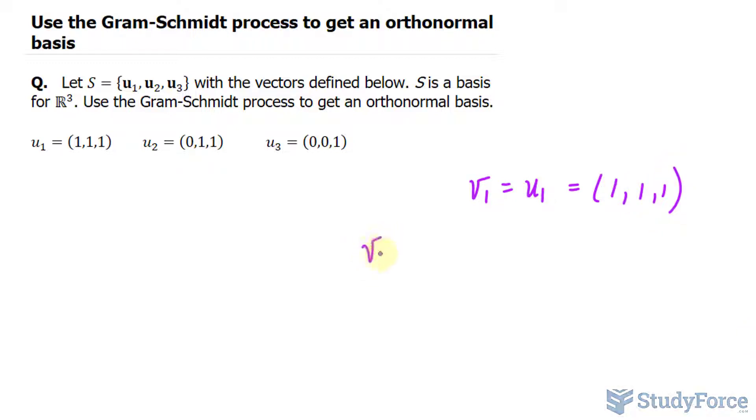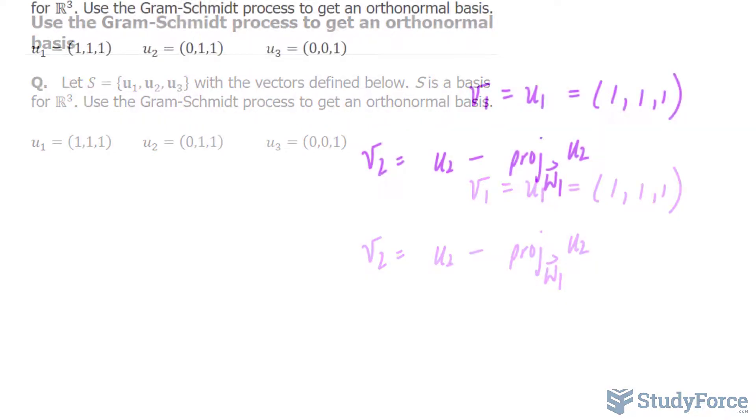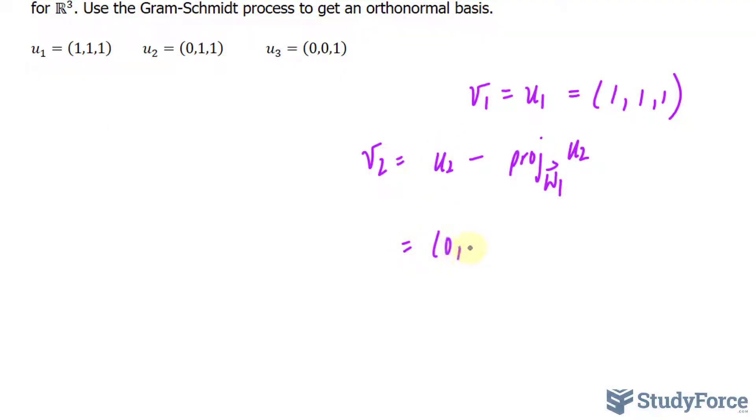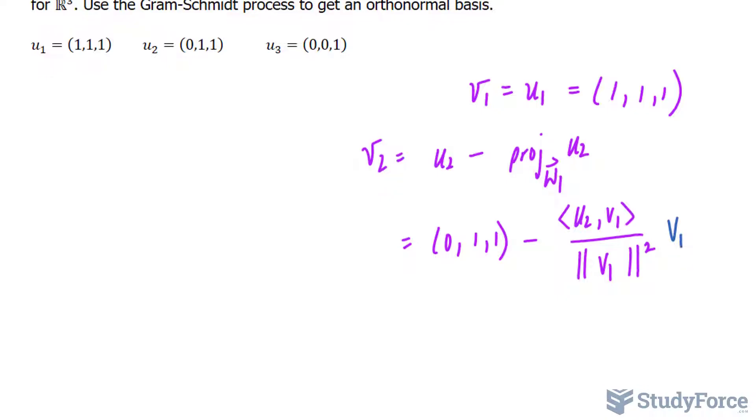Next we set V2 equal to U2 minus the projection of U2 onto W1, where W is a finite dimensional subspace of the inner product space V. To find the projection of U onto W, we have to use the following formula. This vector has the components 0, 1, and 1 minus the inner product of U2 and V1 over the norm of V1 raised to the power of 2, and all of this is being multiplied to the vector V1.